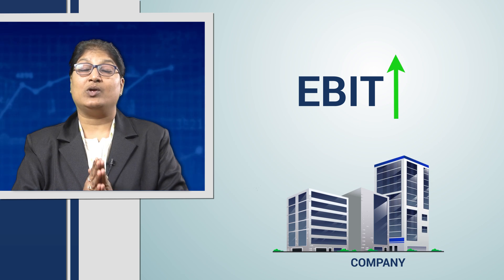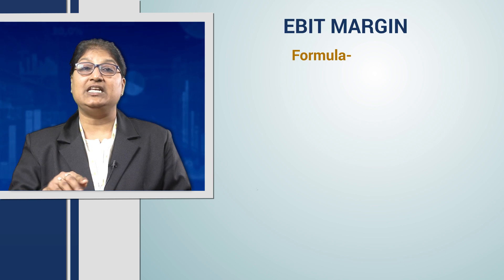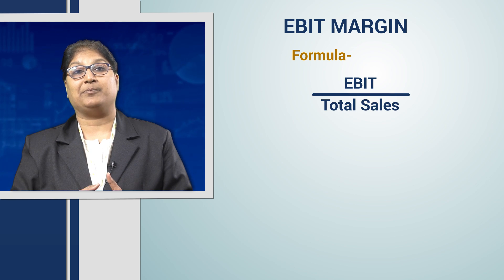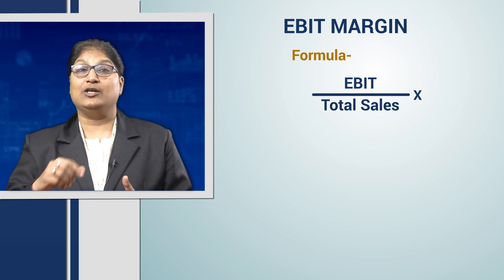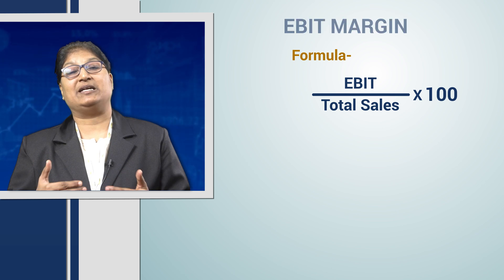But now we have to understand that the EBIT is growing — but what is the growth in percentage terms? Is it growing in percentage terms also? To understand that, what we need to do is we need to divide EBIT by total sales of that company into 100. So this will give us our EBIT margin.